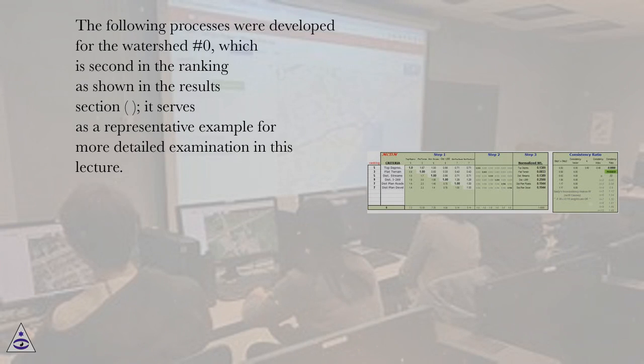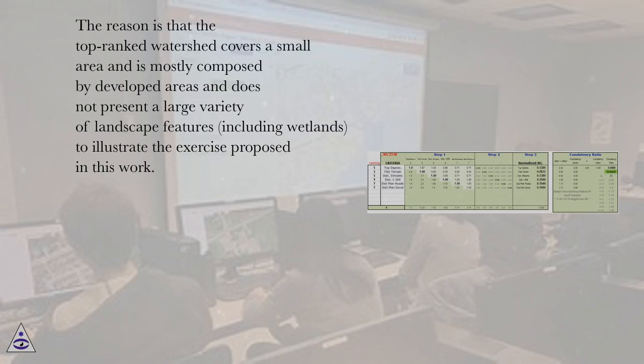The following processes were developed for watershed number 0, which is second in the ranking as shown in the results section. It serves as a representative example for more detailed examination in this lecture. The reason is that the top-ranked watershed covers a small area and is mostly composed of developed areas and does not present a large variety of landscape features, including wetlands, to illustrate the exercise proposed in this work.